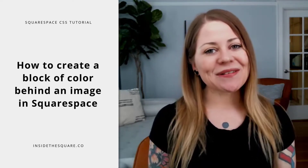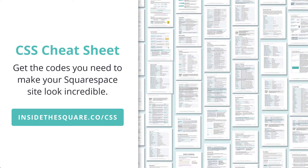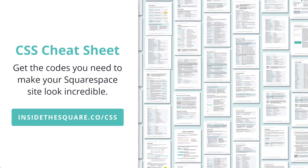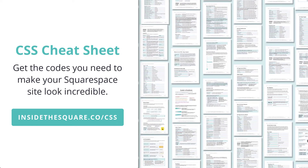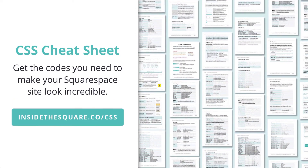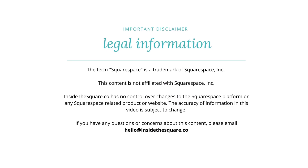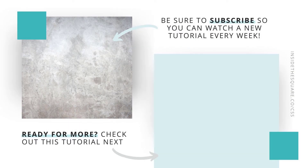The codes I used today are listed in the description below, and now you know exactly what to change to make it look perfect on your own website. Thank you so much for watching this tutorial — I hope you learned something awesome, and most importantly, have fun with your Squarespace website. Bye for now! If you like this tutorial, you'll love my CSS Cheat Sheet — with over 30 pages of pro tips and code snippets specific for Squarespace, you can customize your site way beyond your design menu. Download your copy today at insidethesquare.co/CSS.